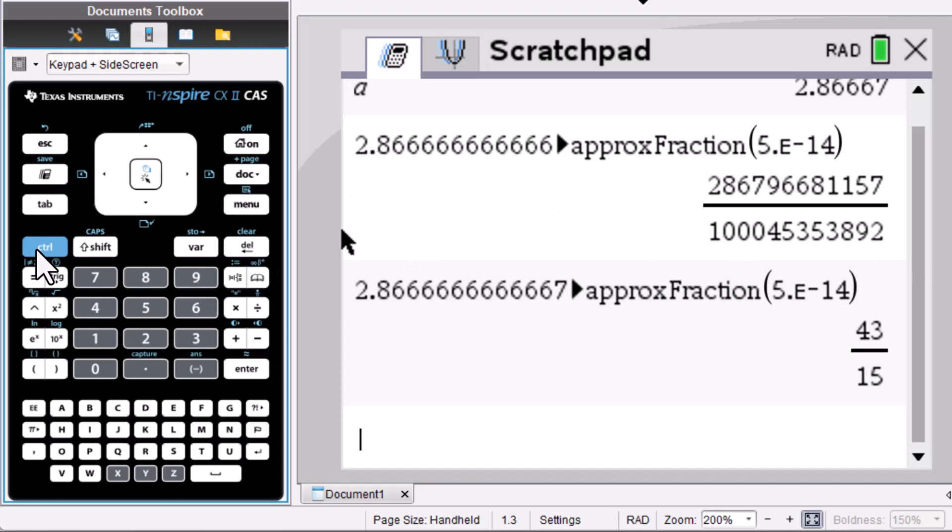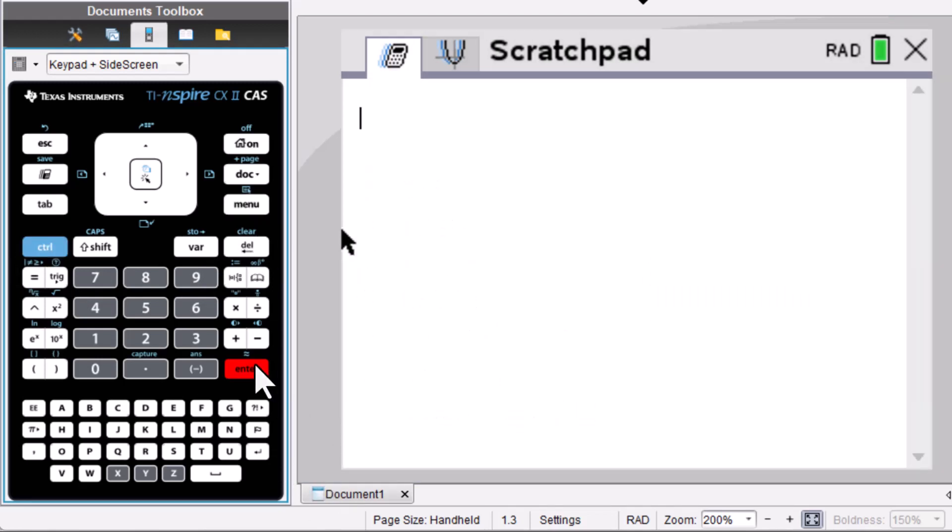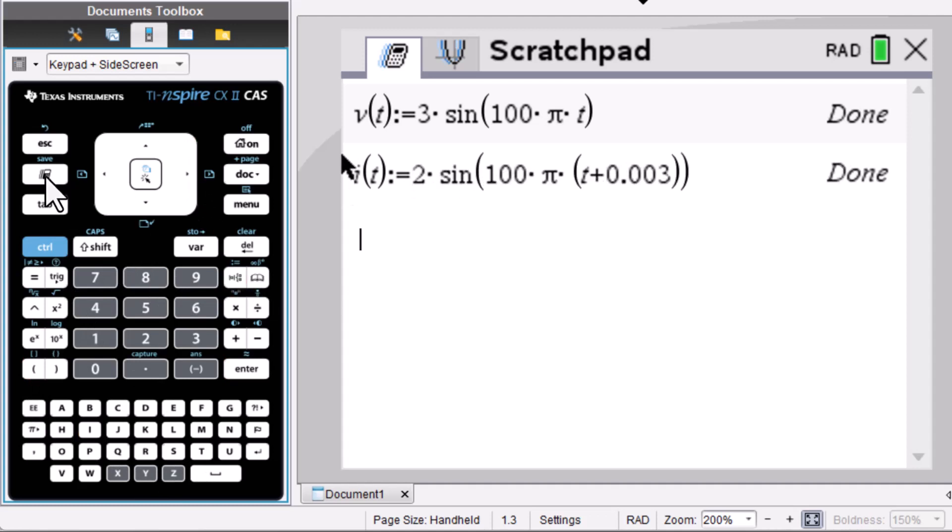Clear the history. Control menu, enter. We will define the function v(t). The second function i(t). Control menu, enter. Then click this scratchpad button again.